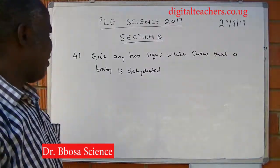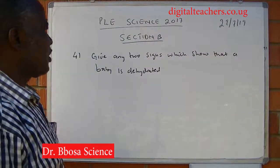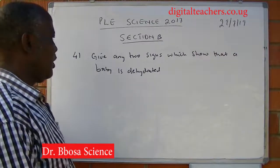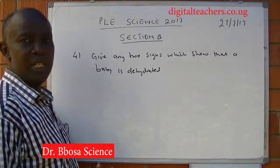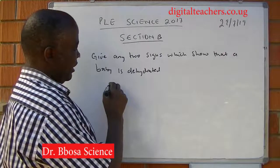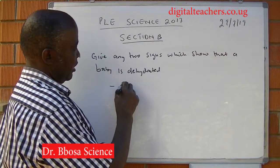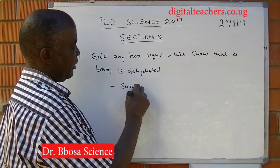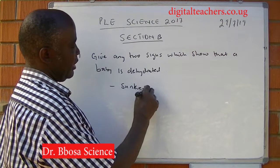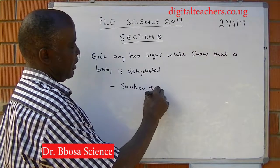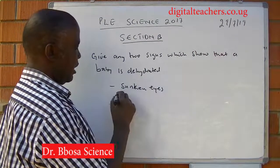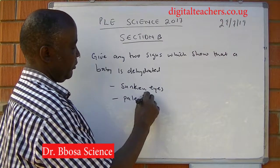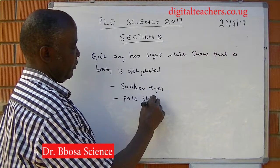Number 41: give two signs which show that a baby is dehydrated. The baby may have sunken eyes or yellow skin.